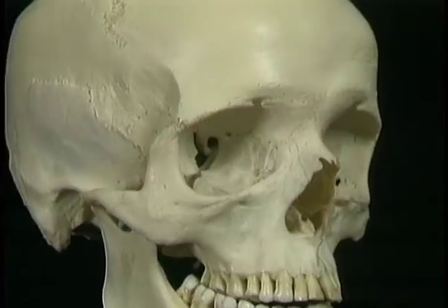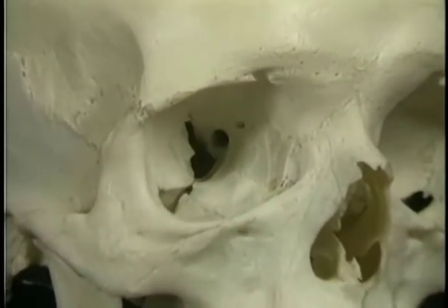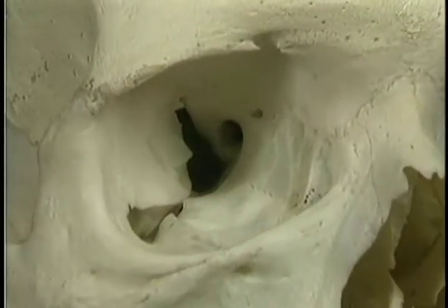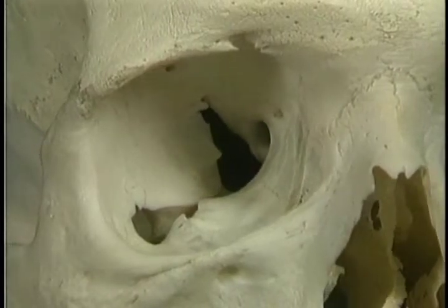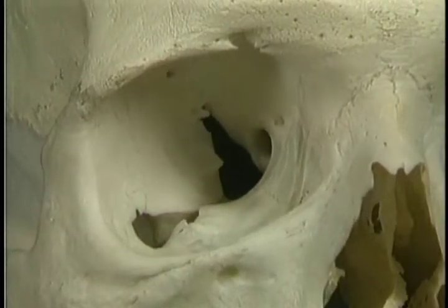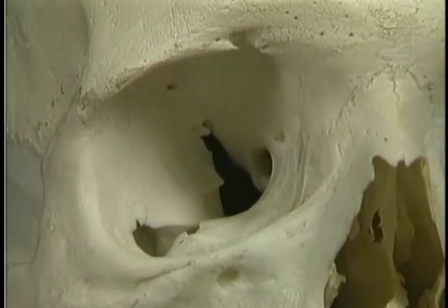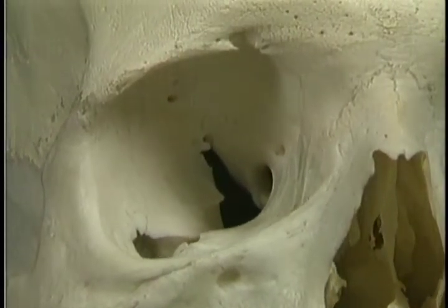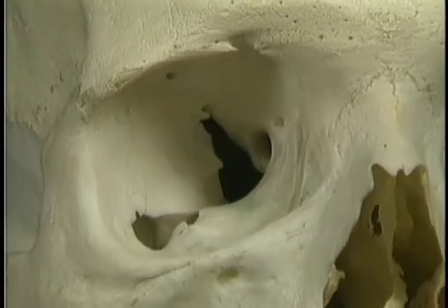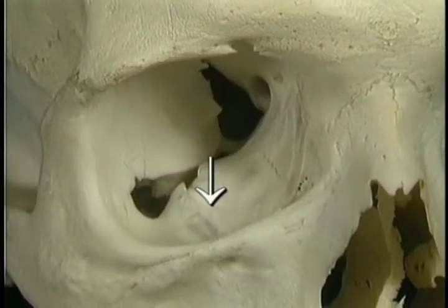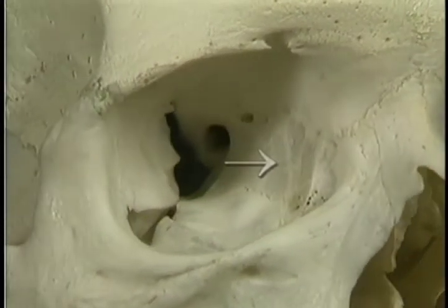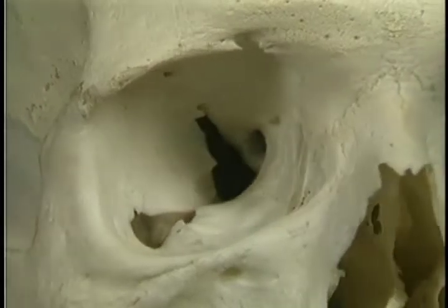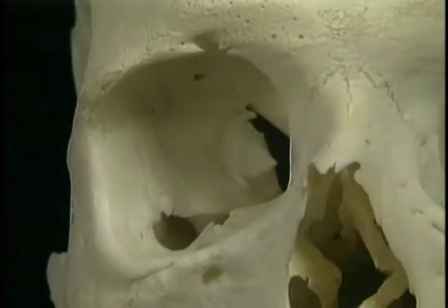Let's start with the bones. This is the bony orbit or orbital cavity. It's described as having a roof, a floor, a medial wall, and a lateral wall.